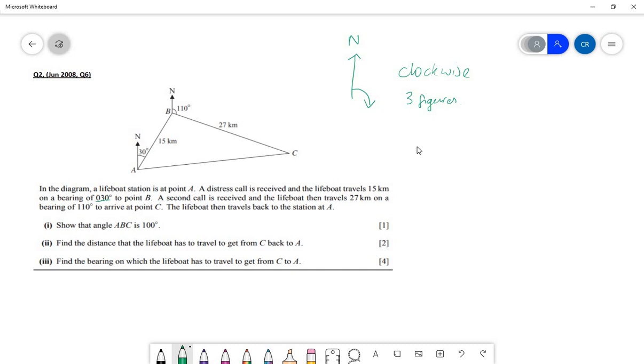The boat is set off from there, so the bearing is from A. We have a north line at A and we're measuring the 30 degrees clockwise. Then we get to B. A second call is received and the lifeboat then travels 27 kilometers on a bearing of 110 to arrive at C. We're at B, we're going on a bearing from B, so that means we need a north line at B. Then we measure 110 degrees clockwise and we head along for 27 kilometers and get to C. Then we're going back to A.